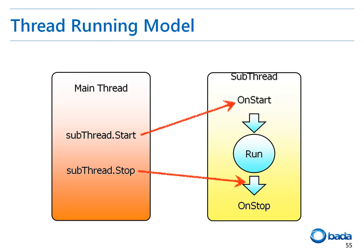Let's see how a thread operates. If the main thread constructs a sub-thread and calls the start function of the thread, the onStart virtual function of the thread is called and then the thread enters the run state. The run function is also a virtual function that the developer should implement. You can implement any operations to be performed by the thread here.